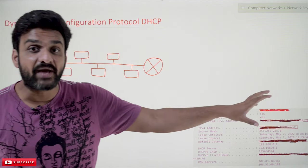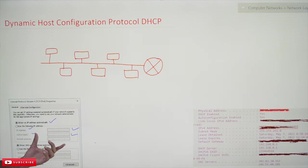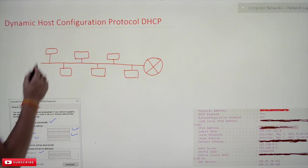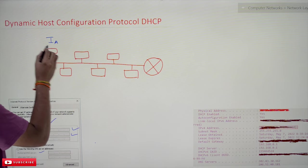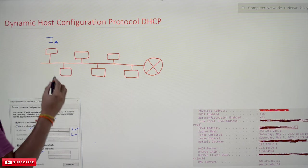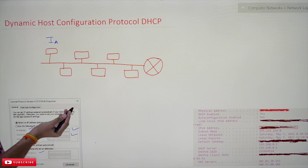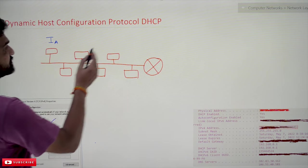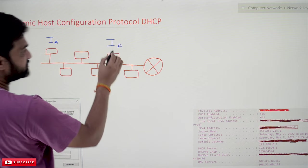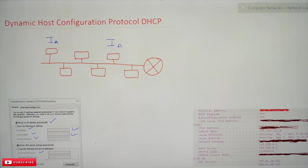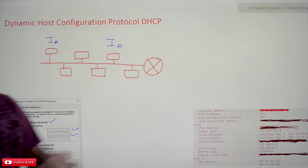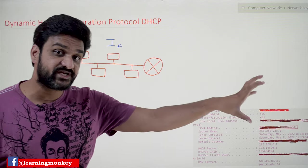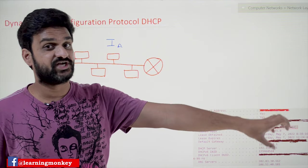What are the disadvantages of manually giving these details? For example, consider a network where the administrator has given IP address A to one system. If he forgets and gives the same IP to another system, this is what we call an IP conflict. If there is an IP conflict, both systems will not get the internet connection, and identifying this IP conflict is a very tough job. Manually giving details on each and every system is not an efficient way.